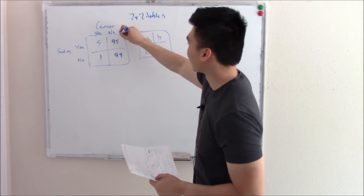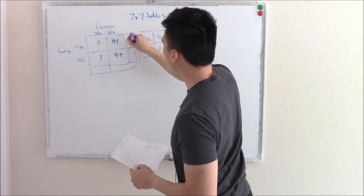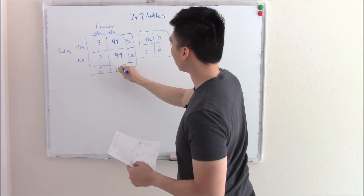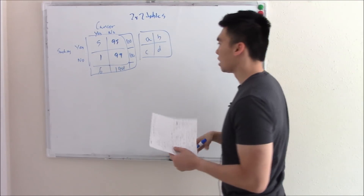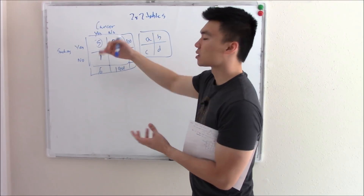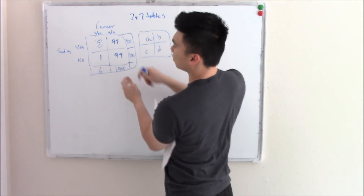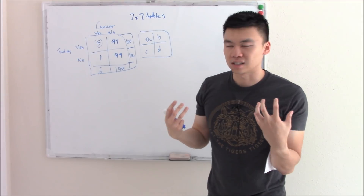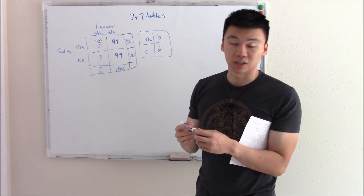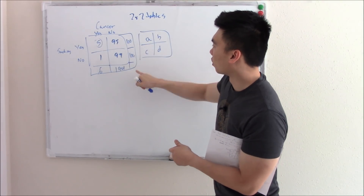I actually like to make it a three by three table where I add up the population. Here we had a hundred people in each group, six people total with cancer, and 194 who do not. I make it a three by three table because sometimes when you're taking a test and nerves get the best of you, you might do five divided by 95 instead of 100, and get the question wrong. So I always add the general total population to avoid any confusion.